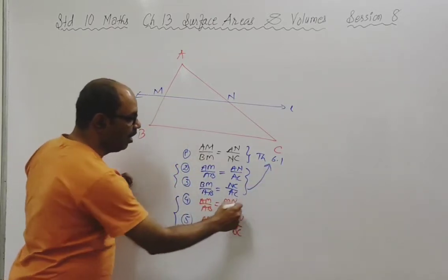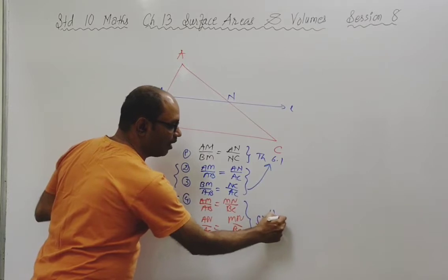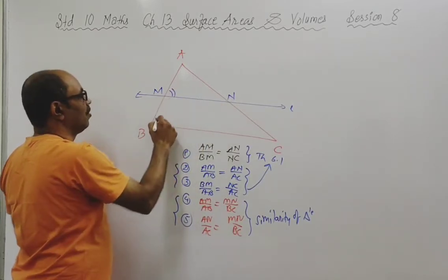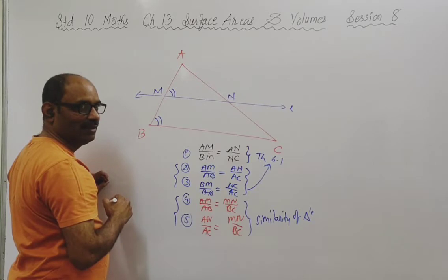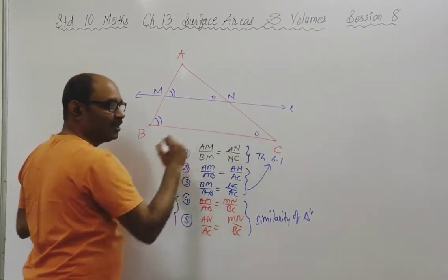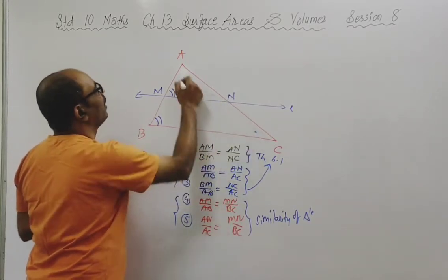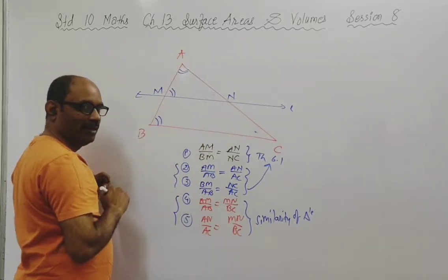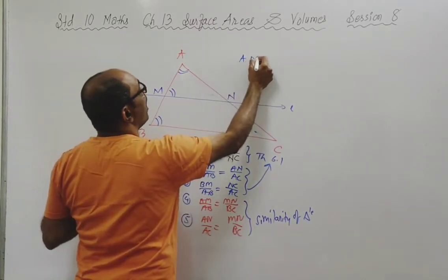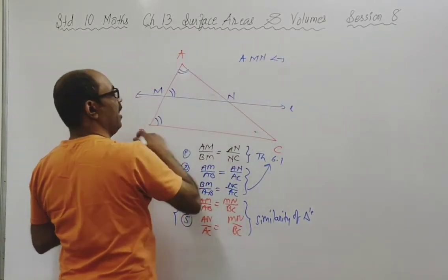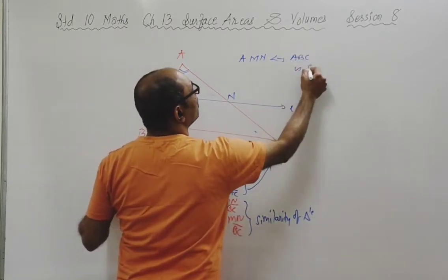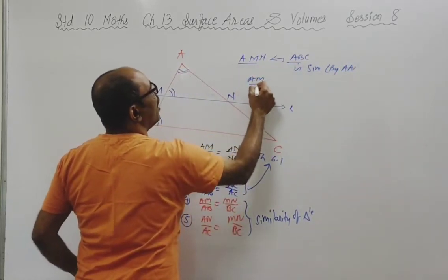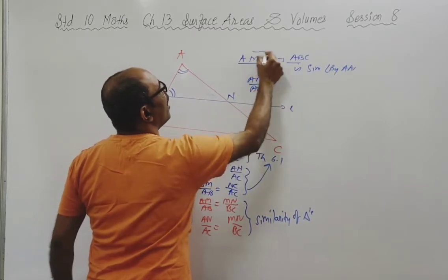This result comes from similarity of triangles. Since MN is parallel to BC, this angle equals this angle and this angle equals this angle - they are corresponding angles. The angle BAC and angle MAN is a common angle. So by the AA criterion, triangle AMN is similar to triangle ABC. Therefore AM upon AB equals MN upon BC.